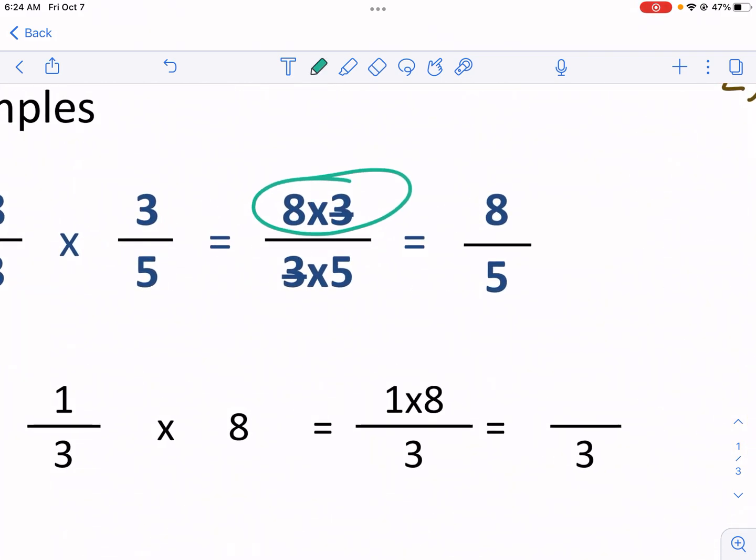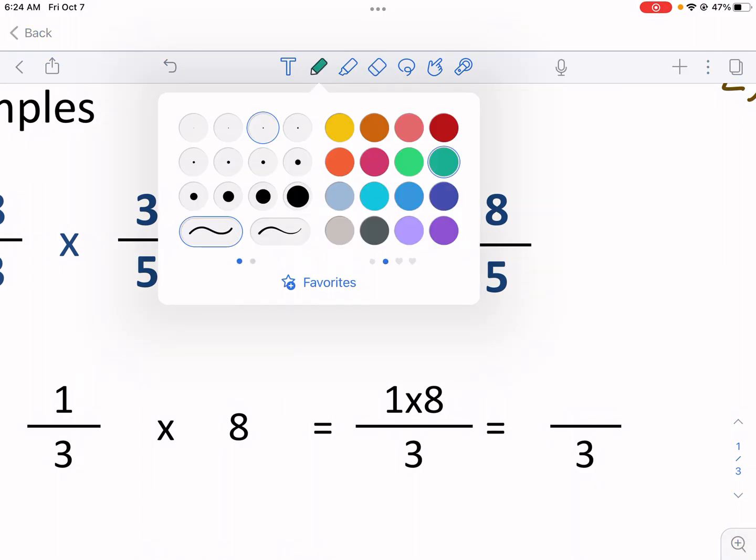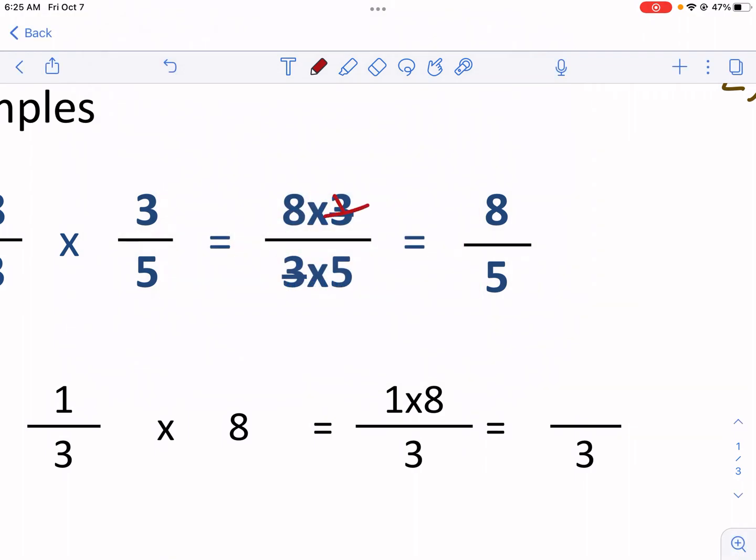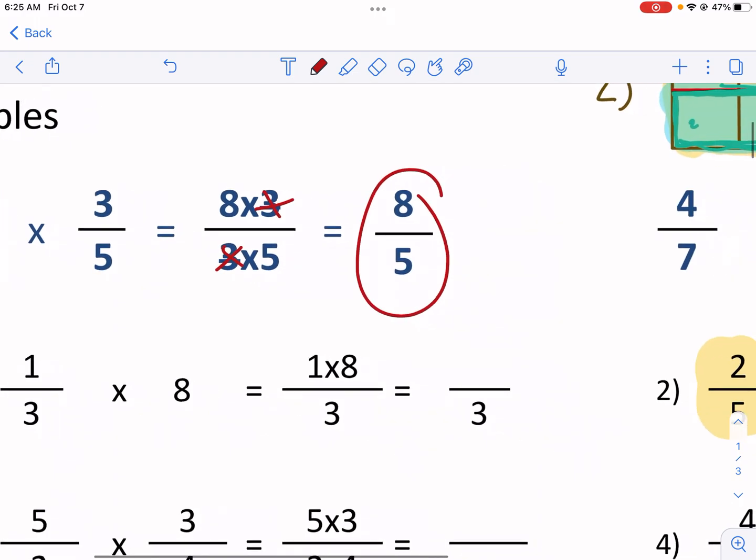Now what you see here is you see this process of being reduced. If you have a three multiplied in the top and a three multiplied in the bottom, you can cross those out. That's what's happening here in this example. The three is being crossed out. And really what you're left with is eight fifths.